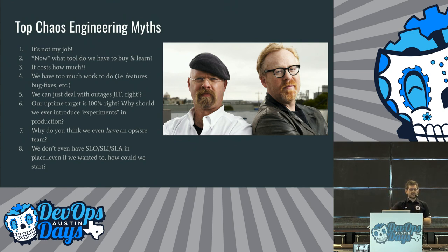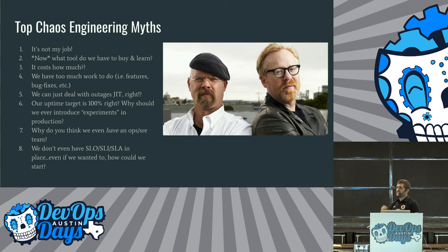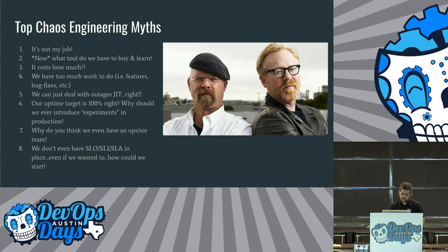Number five: 'we can just deal with outages just in time — that's why I pay you ops people.' If there are problems, you go fix them. Talk about that, have a conversation. Number six: 'our uptime target is 100%, our SLO is 100%, there are no error budgets.' That's not a thing — you're going to have a very candid conversation about running experiments in production, which gets people jittery. Number seven: 'why do you think we even have an ops SRE team?' Number eight: 'we don't even have an SLO, SLI, or SLA in place — how could we start?' Well, you have to start somewhere. Have a conversation about these myths and be prepared to answer them at your work.